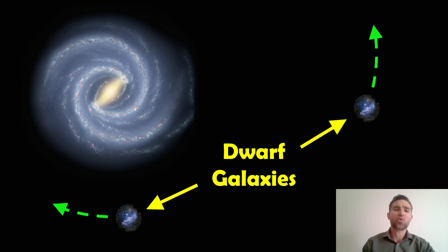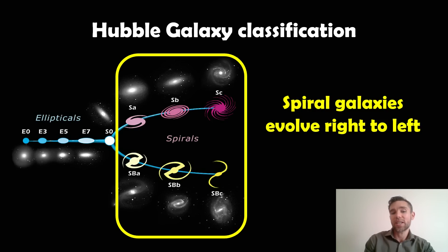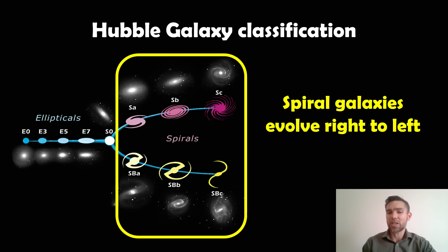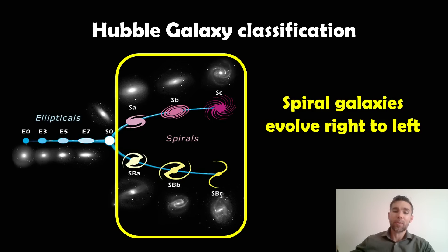Before we do that, let's just recap the main types of galaxies in general. If we go to the Hubble classification system, you get this tuning fork shape. You have spirals on the right and ellipticals on the left. The top branch is for normal spirals and the bottom branch is for barred spirals, with an intermediate category in the middle for ones with a weak bar. Evolution-wise, galaxies move from the right-hand side to the left, with spiral arms getting more tightly wound.